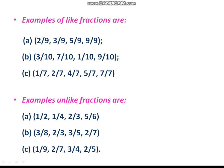Examples of unlike fractions: 1 by 2, 1 by 4, 2 by 3, 5 by 6 — the denominators are different. Another example: 1 by 9, 2 by 7, 3 by 4, 2 by 5 — here also the denominators are different.